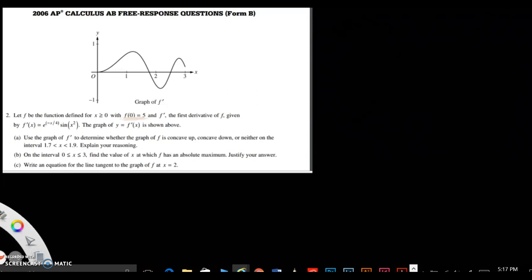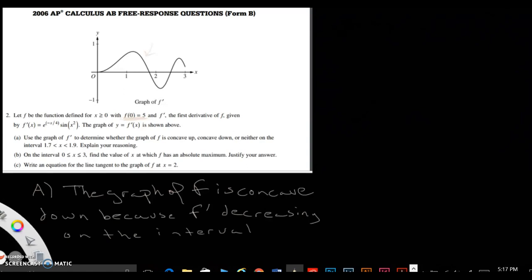Okay, so if you look at this graph, it is definitely concave down, because if you look at this graph over here, f prime is decreasing, so it has to be concave down. So for part a, we would say the graph of f is concave down, because f prime is decreasing on the interval 1.7 to 1.9.